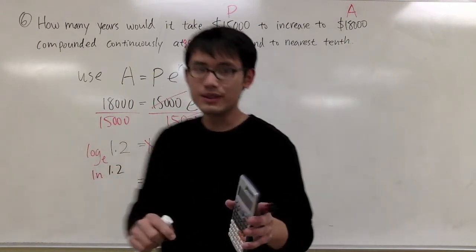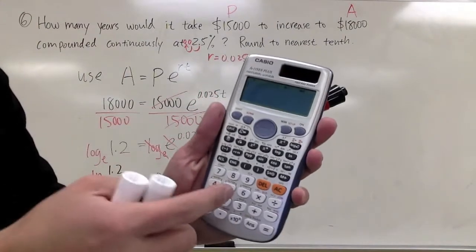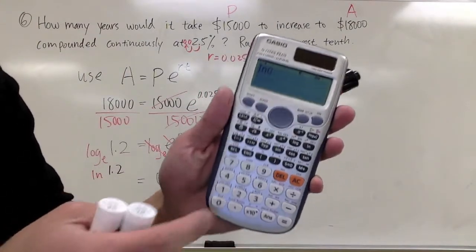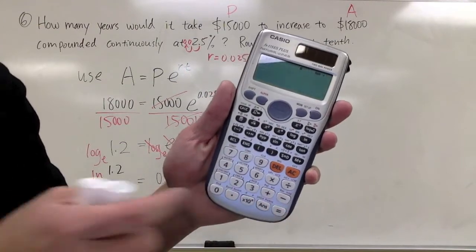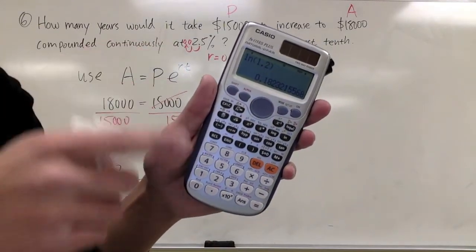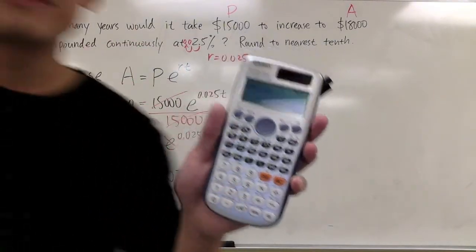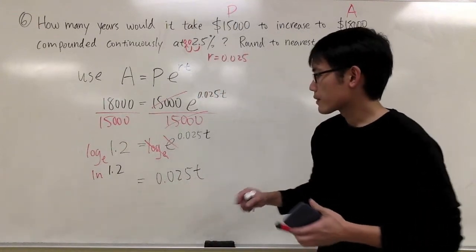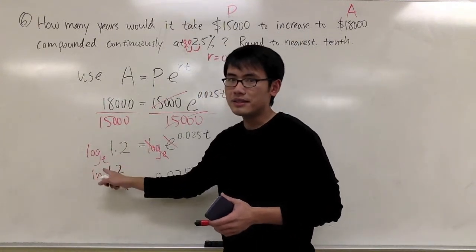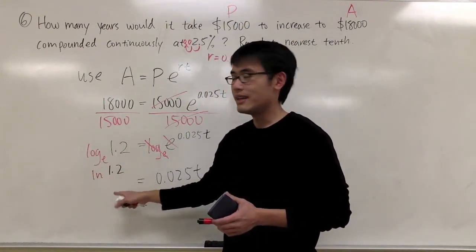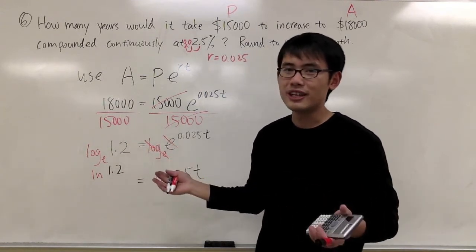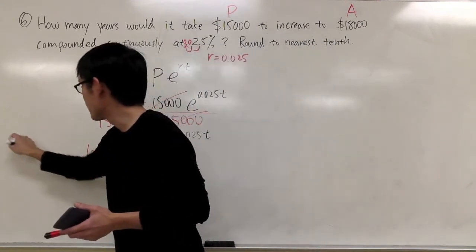So we are going to do this as LN of 1.2. So let's do it together, punching LN and 1.2, like that. And we get 0.182. Instead of doing log base e, we'll just take LN, and LN and e will cancel each other out as well. So maybe I will write this down for you guys.